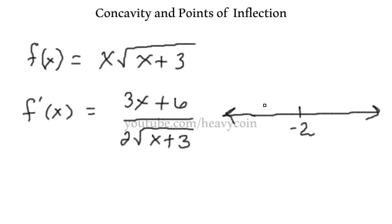And if I plug in a number to the right, like for example 0, we would end up getting a positive number. So it was decreasing and increasing.